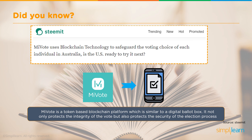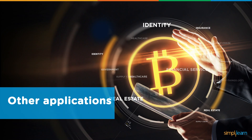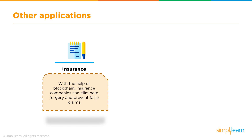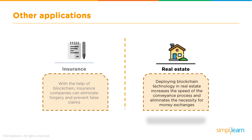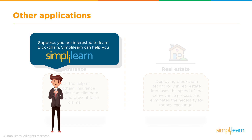Now let's look at some other applications of blockchain. In insurance, blockchain can eliminate forgery and false claims. In real estate, it increases the speed of the conveyance process and eliminates any requirement for unnecessary money exchanges.